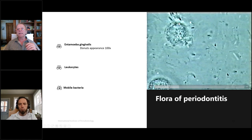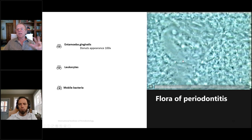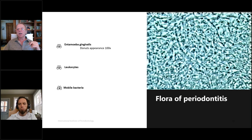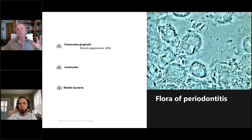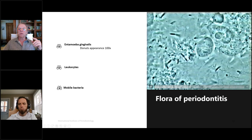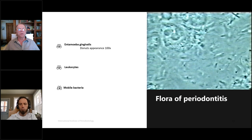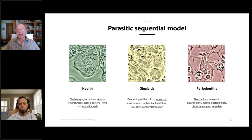A second parasite, Trichomonas tenax, is a flagellate. When you have both amoeba and trichomonas together, you have a more aggressive disease with rapid bone loss — sometimes losing most of the bone within one to two years. This is a good indication of the severity of disease. The sequence is clear: health means normal bacteria and epithelial cells in a normal sulcus with no bleeding; gingivitis means motile bacteria and leukocytes — opening the door to parasites causing the disease.